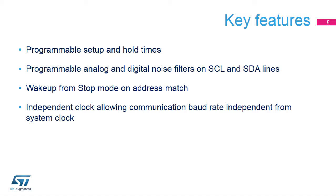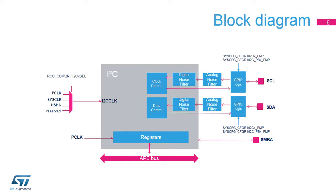The peripheral can wake up the MCU from stop mode when an address match is detected. The peripheral has an independent clock domain, which allows a communication baud rate independent from the system clock. Here is the I2C block diagram. The registers are accessed through the APB bus, and the peripheral is clocked with the I2C clock, which is independent from the APB clock.